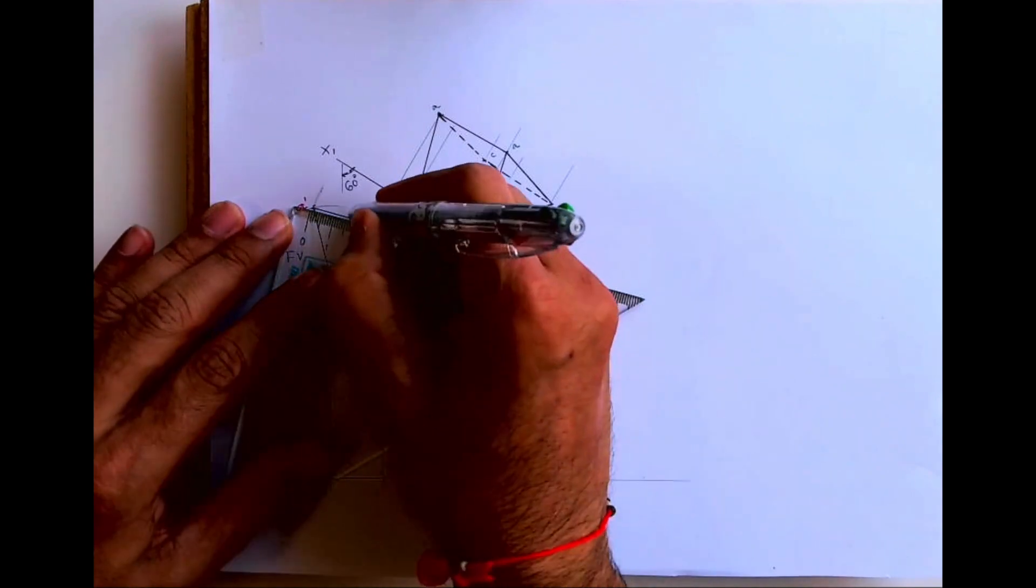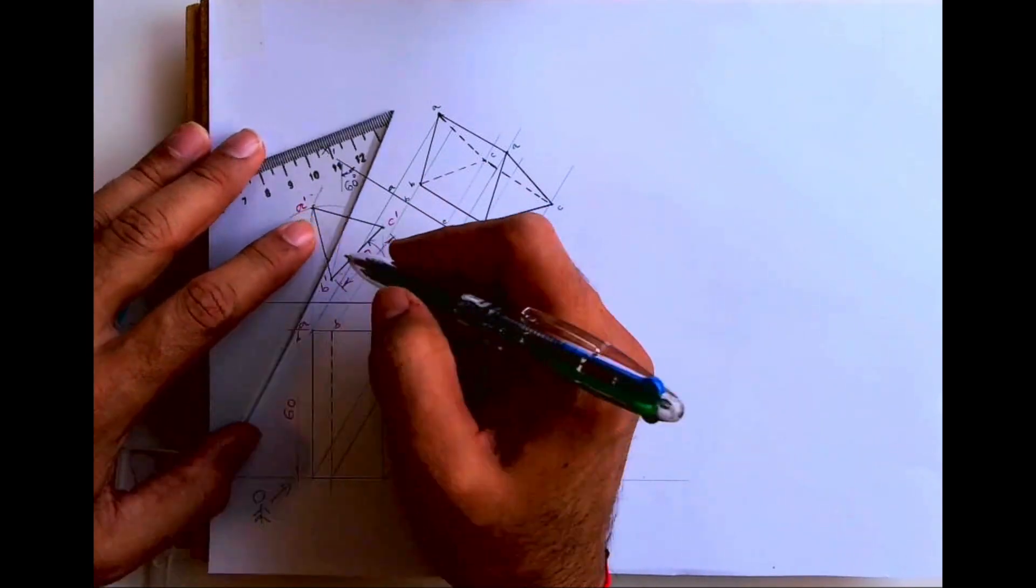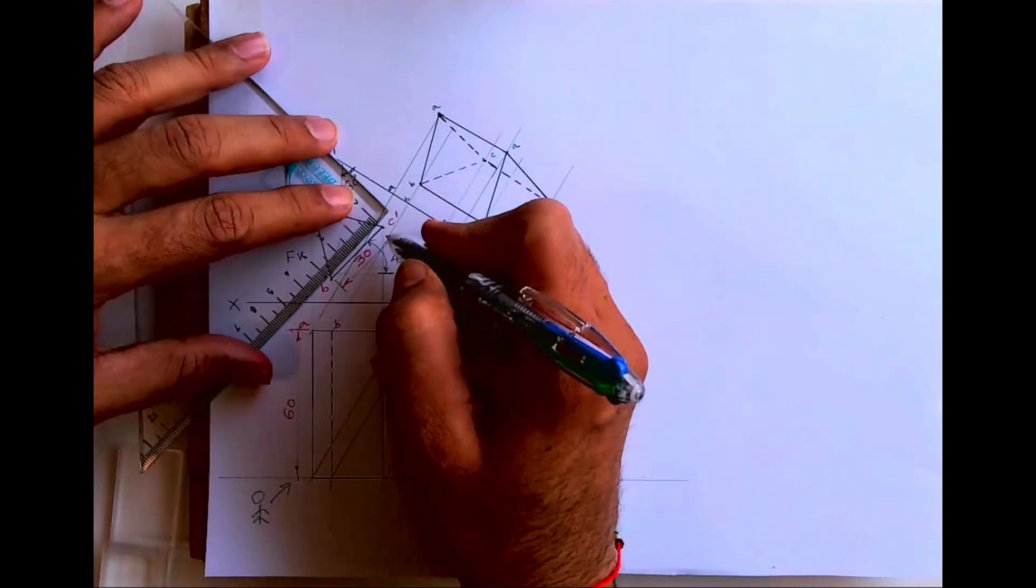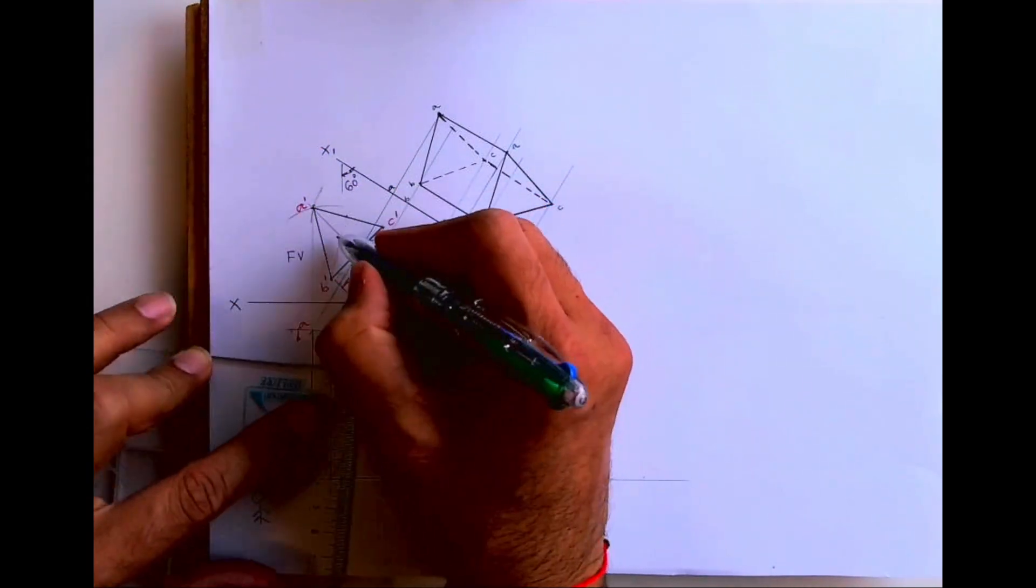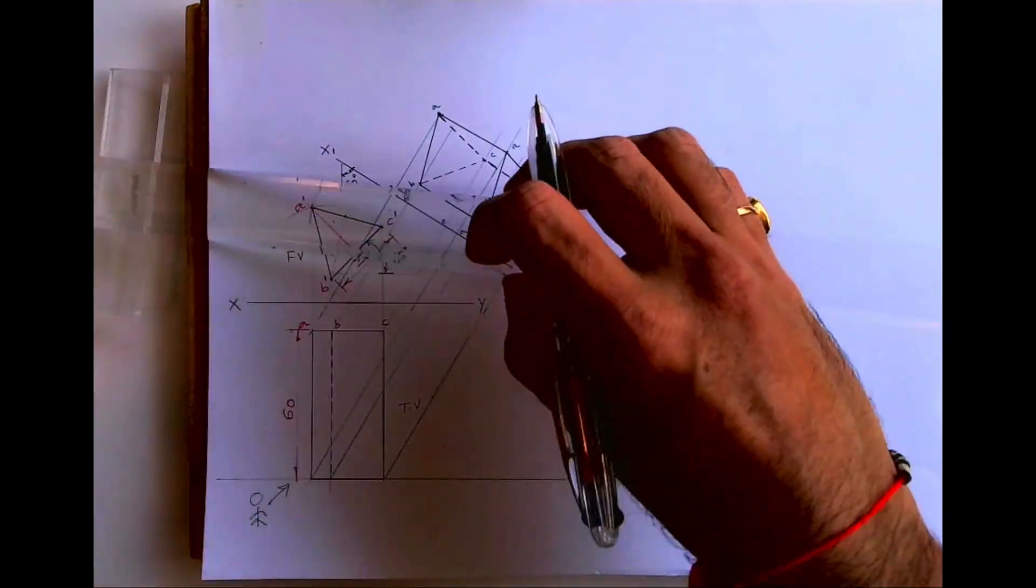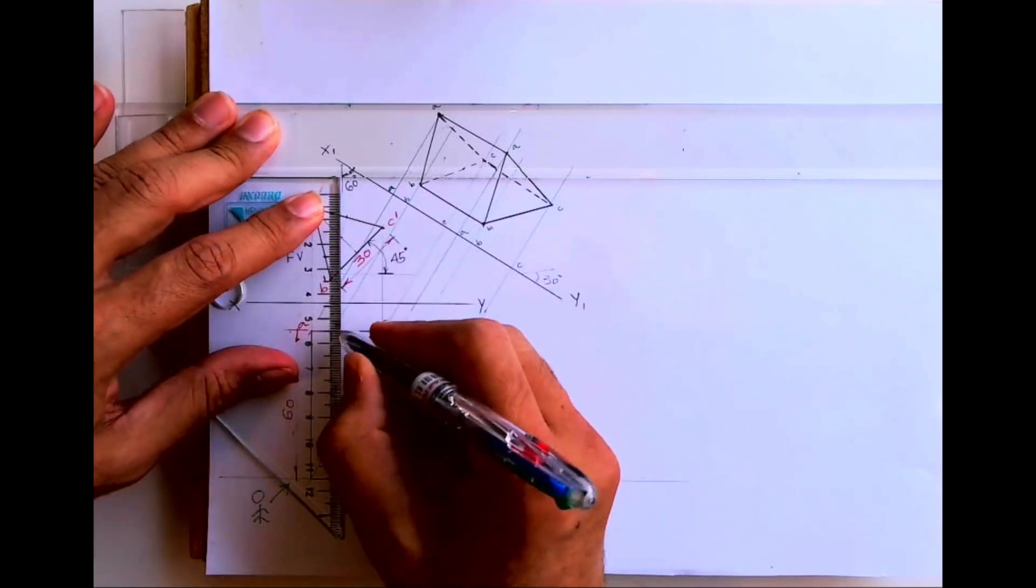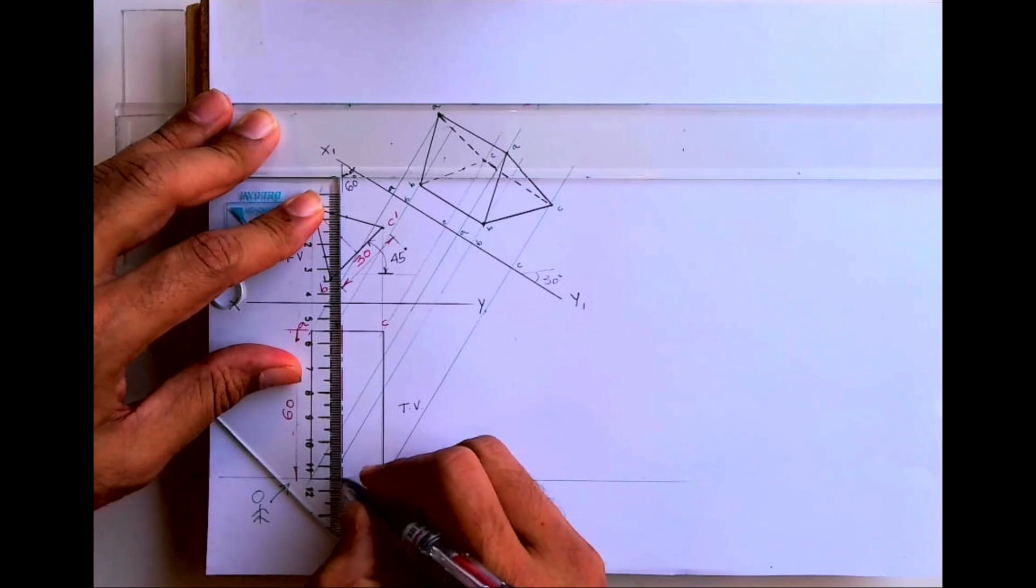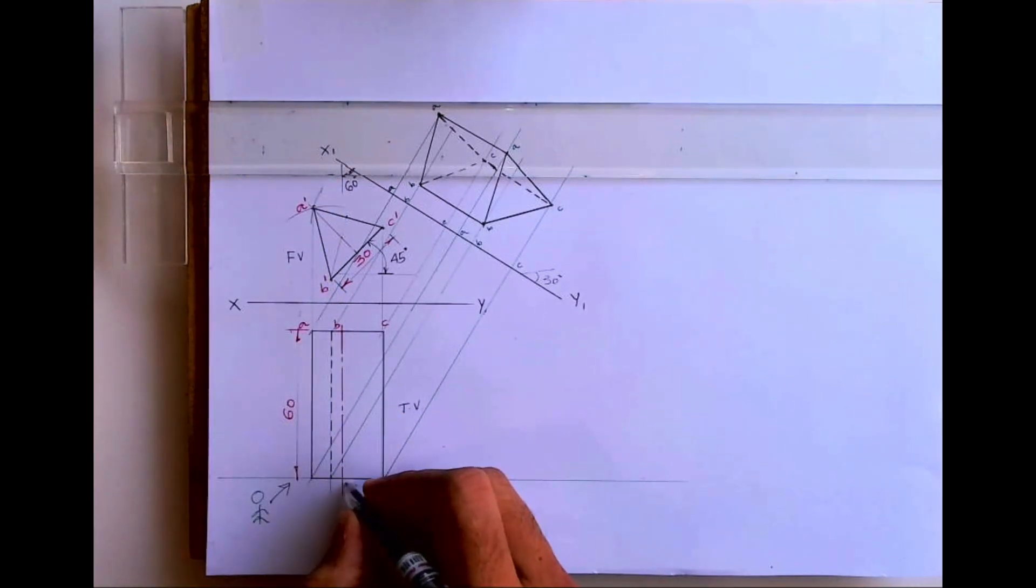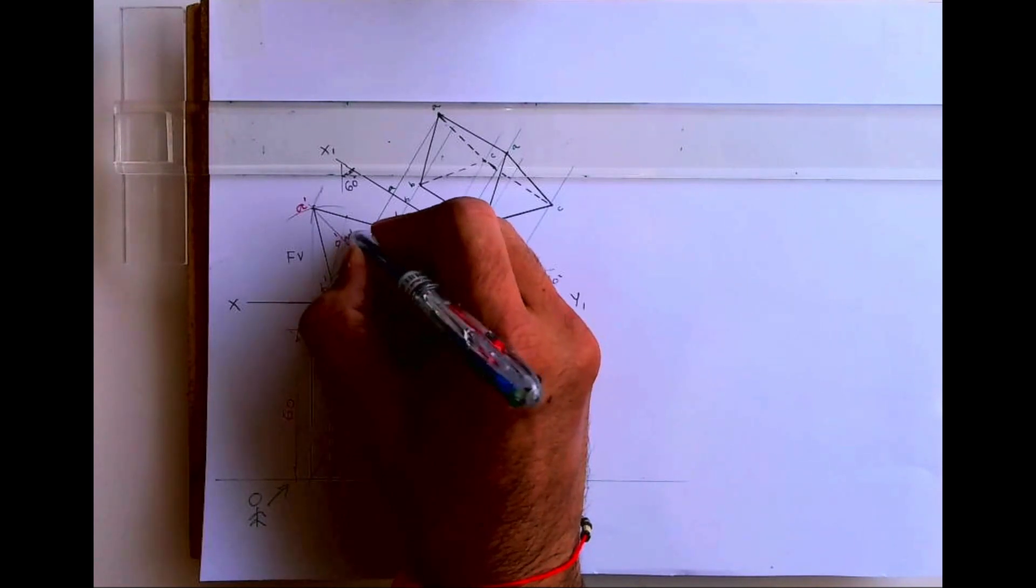And if you want to mark midpoint, this is for axis. If you want to show axis in the 3D object, remember axis is imaginary line, it doesn't exist. So priority wise it will be least important. But still if you want to draw, you mark O, M, O dash, M dash.